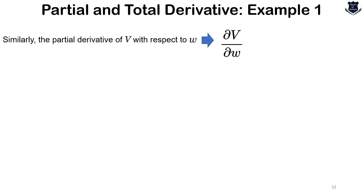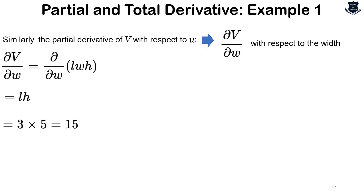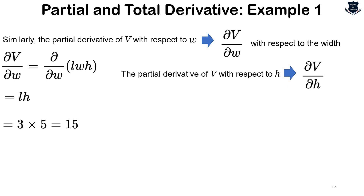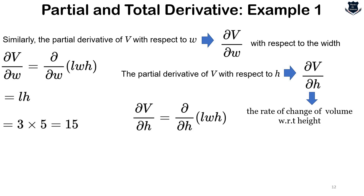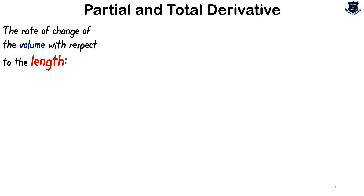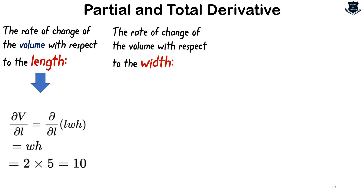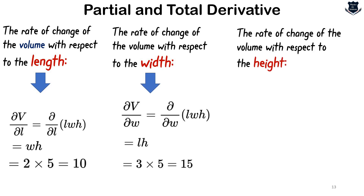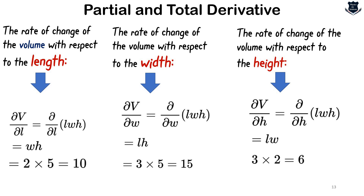The partial derivative of V with respect to H gives the rate of change of volume with respect to height, so del V by del H = L × W = 3 × 2 = 6. So doing it component by component: the rate of change of volume with respect to length is 10, with respect to width is 15, and with respect to height is 6. These are three partial derivatives, each taking one dimension into account while holding the others constant.